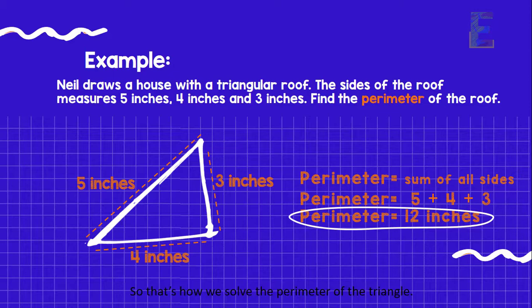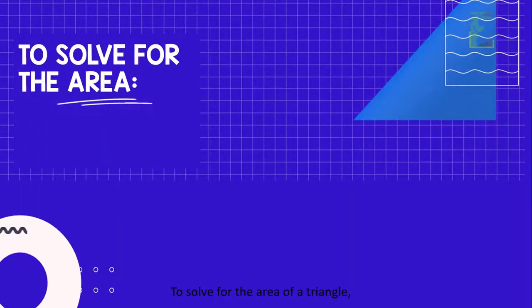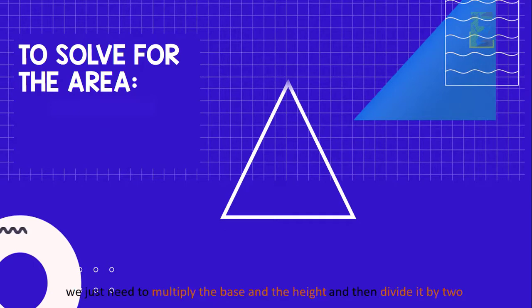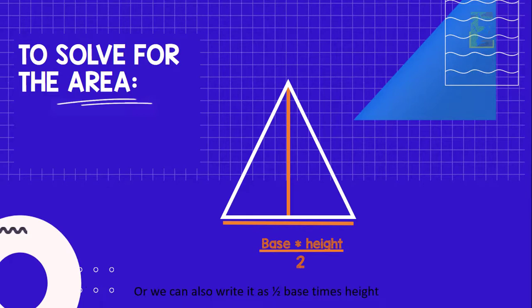And so that's how we solve perimeter of a triangle. Now let's proceed on finding the area of a triangle. To solve for the area of a triangle, we just need to multiply the base and the height and then divide it by 2. Or we can also write it as 1 half base times height.